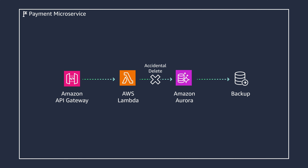Aurora backs up your cluster volume automatically and retains restore data for the length of the backup retention period, up to 35 days. You can quickly restore to any point within this period, typically within five minutes of the current time, which creates a new cluster.